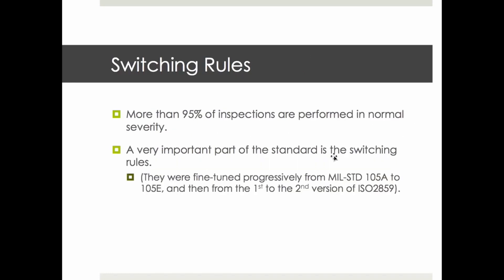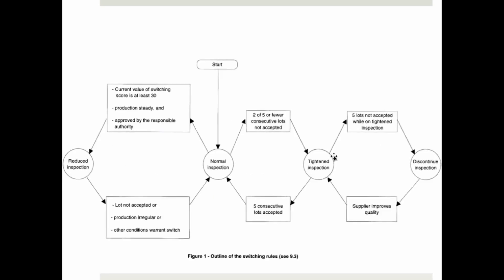Now let's talk about switching rules. More than 95% — maybe 99% — of inspections in Asia are conducted at normal severity. But a very important part of the standard is that there are three types of severities. It starts with normal severity, but if the supplier achieves a certain score, it switches to reduced inspection, meaning you pick fewer samples and it's even easier for the supplier to pass.